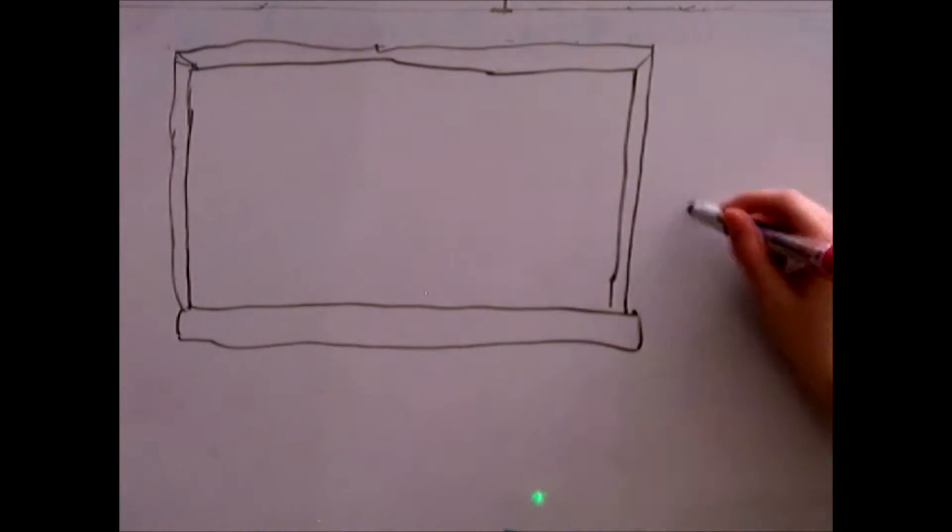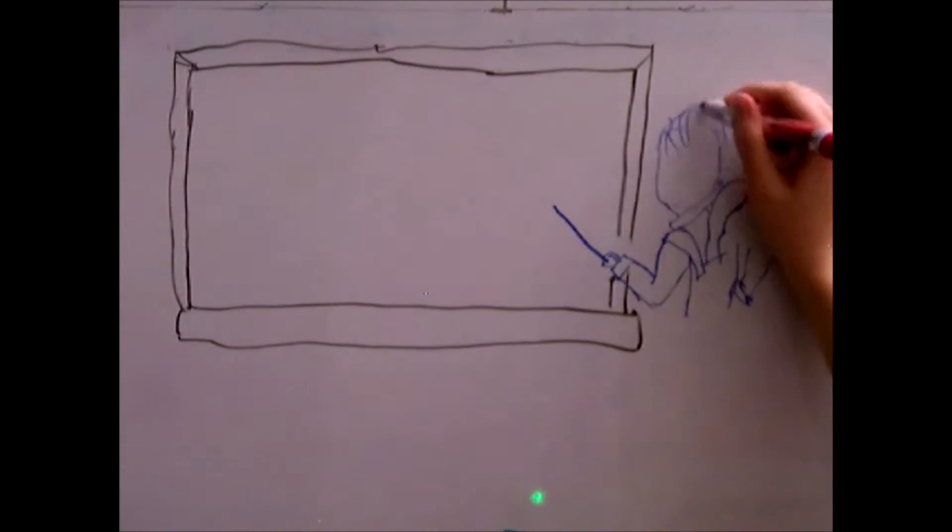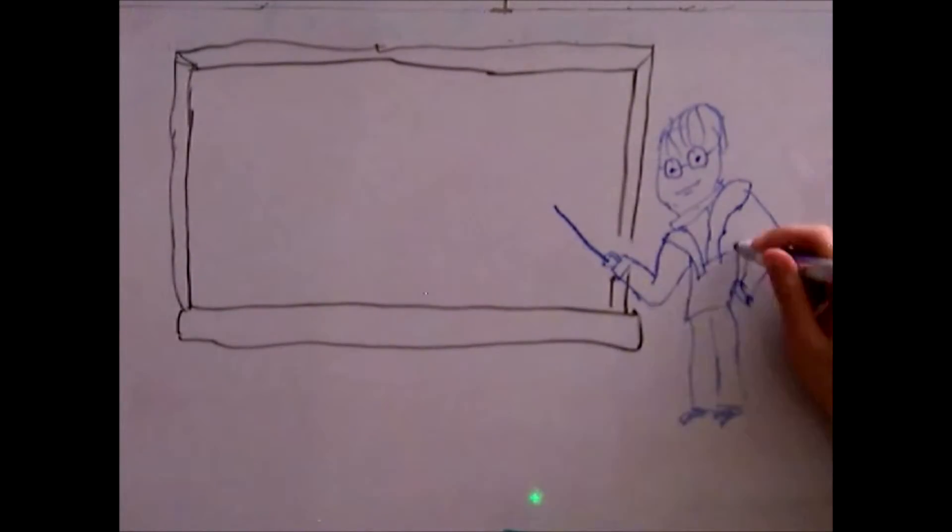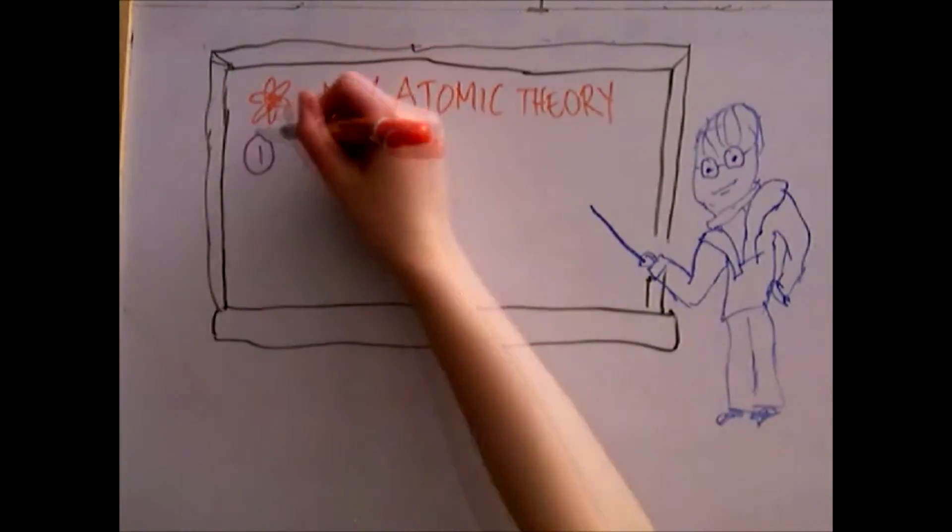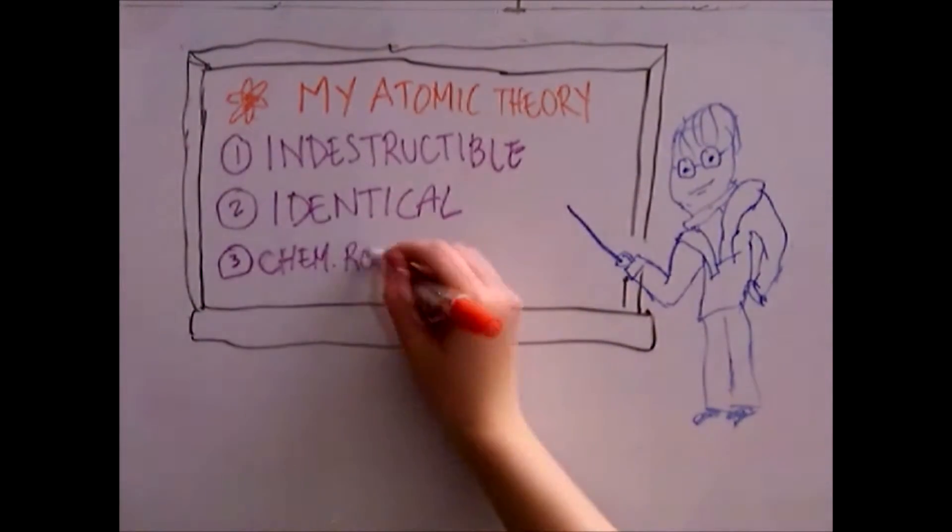Dalton's atomic theory stated that: 1. All matter is composed of atoms, and all atoms are indestructible and indivisible. 2. All atoms of a given element are identical in terms of mass. And finally, a chemical reaction is the rearrangement of atoms.